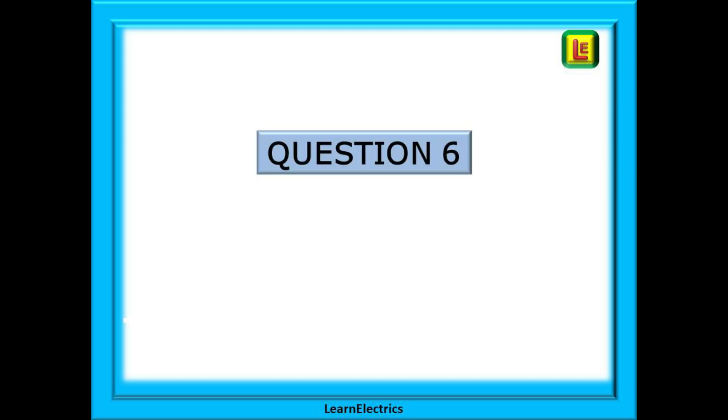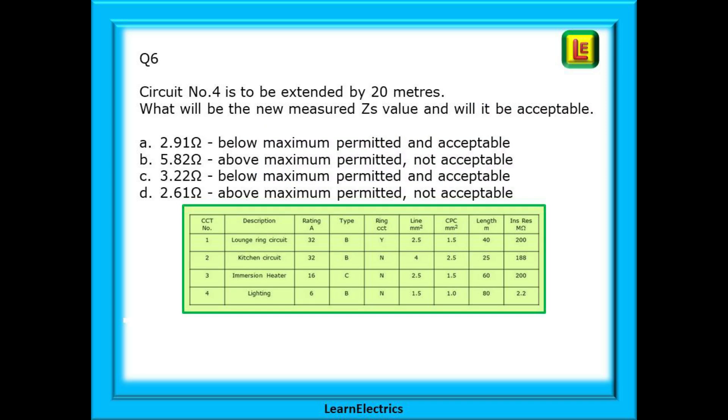On to question 6. Circuit number 4 is to be extended by 20 meters to accommodate some extra lighting. What will be the new measured ZS value and will it be acceptable? We can calculate this and it is always a good idea to know the new value before extending the circuit just in case. Pause the video and complete the calculation.